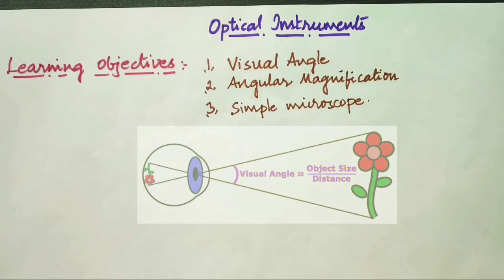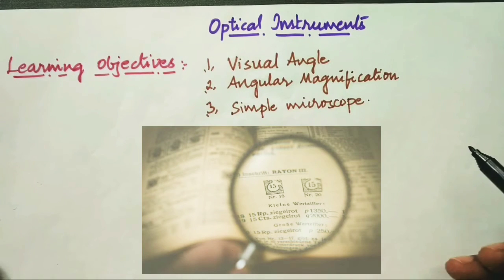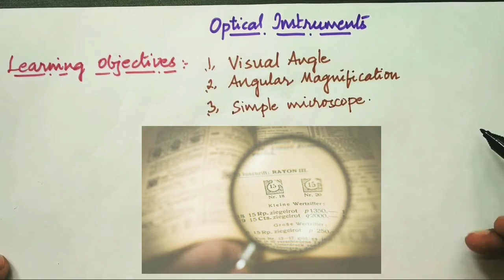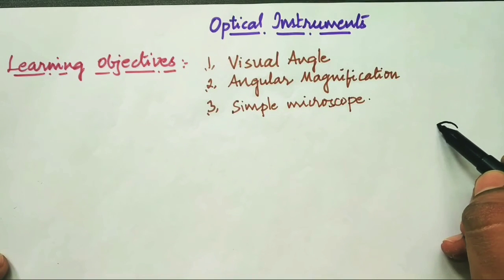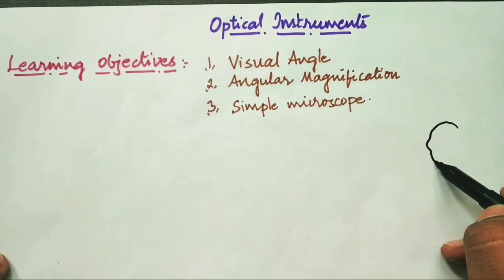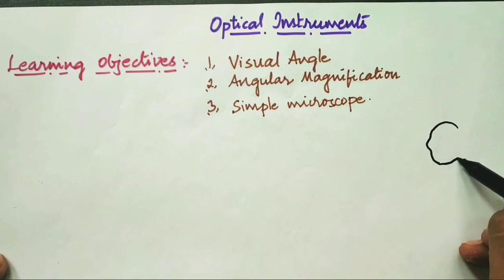Hello everyone. The learning objectives of today's video lesson on optical instruments are: number one, visual angle; number two, angular magnification; and number three, simple microscope and its working, including how to find the angular magnification of a simple microscope.